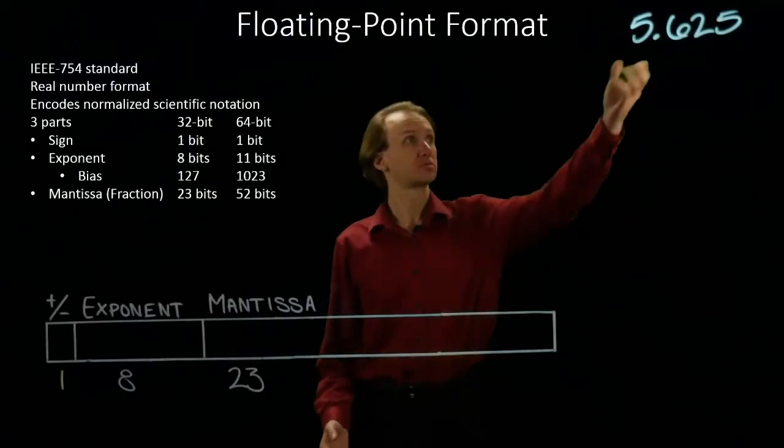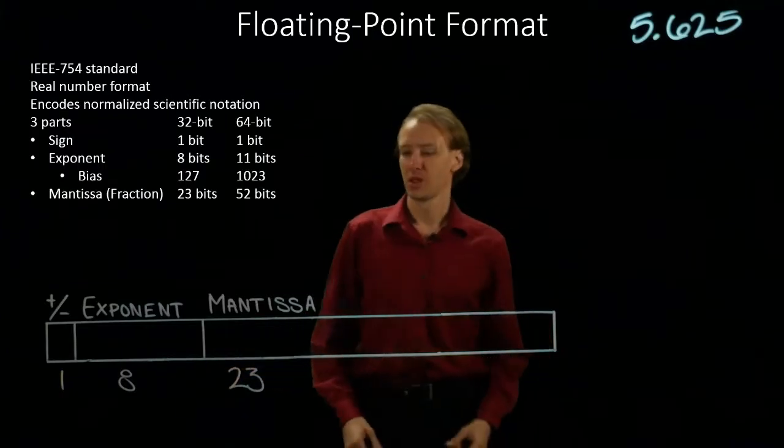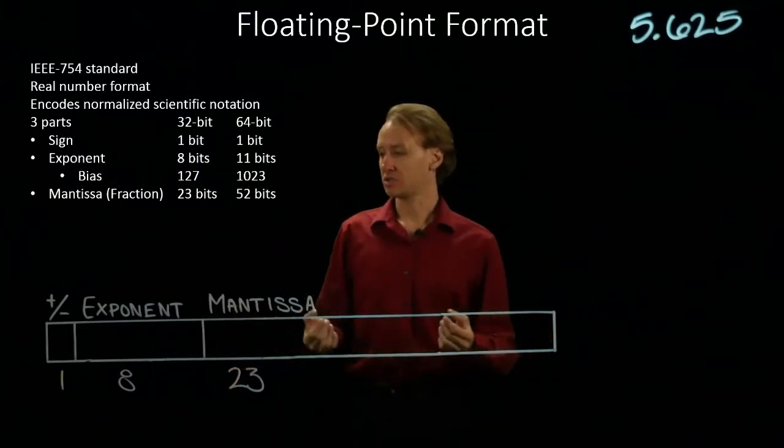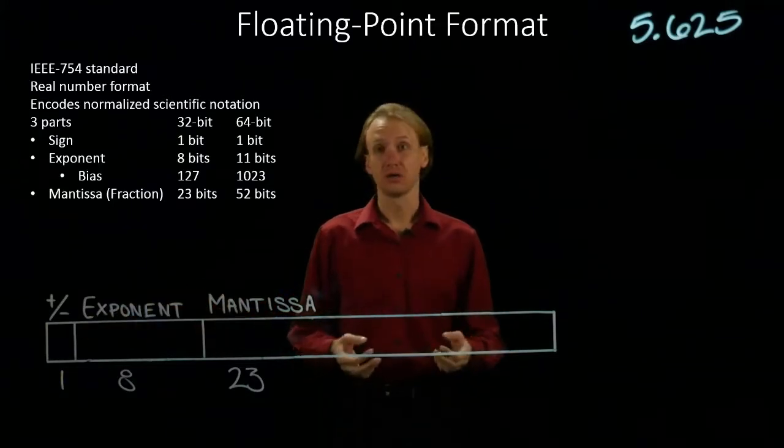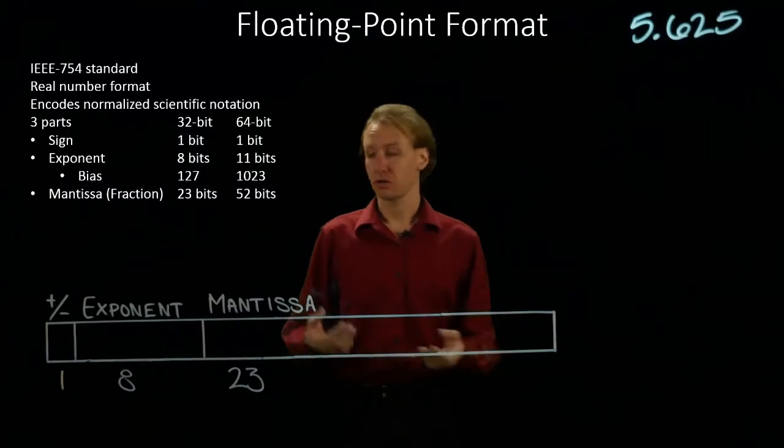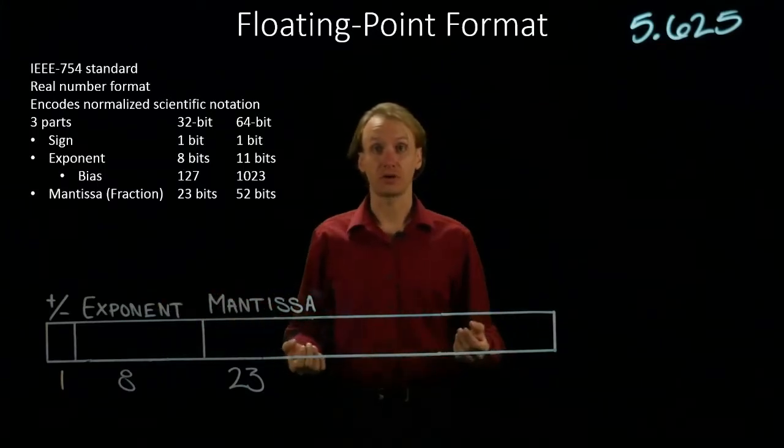This time I'm going to convert 6.25 into the floating point format. I have this helpful box here that's divided up into each of the three parts that I'm going to need to fill in. I'm going to figure out what those parts are and then I will just be able to fill them into the box and there will be my floating point representation.